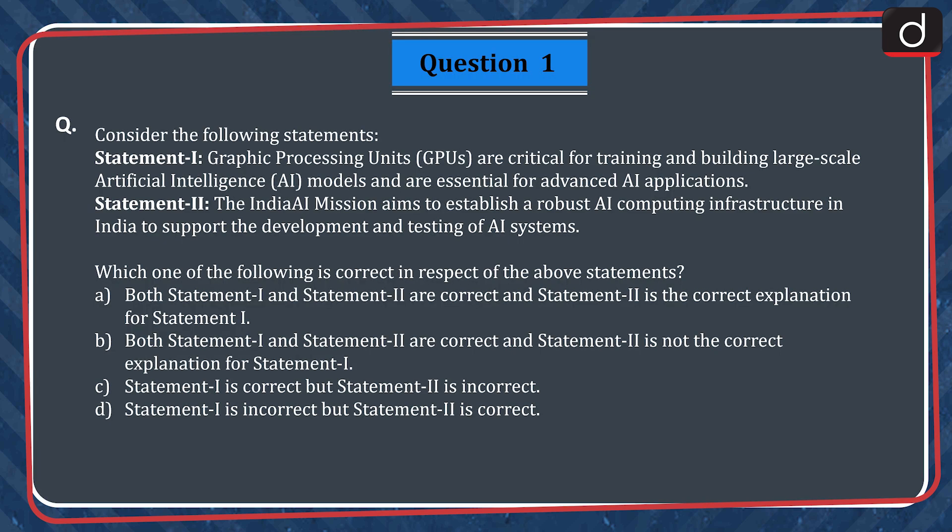Moving on to the first question. Consider the following statements. Statement 1: Graphic Processing Units (GPUs) are critical for training and building large-scale artificial intelligence or AI models and are essential for advanced AI applications. Statement 2: The India AI Mission aims to establish a robust AI computing infrastructure in India to support the development and testing of AI systems. Which of the following is correct in respect of the above statements?